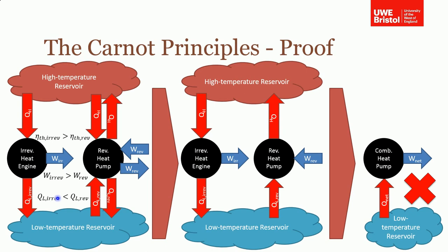And because the heat being rejected by the irreversible heat engine is less than that rejected by the reversible heat engine, then there's a net heat flow there. So when we combine these two, we've now ended up with a heat pump or heat engine that's got 100% efficiency.